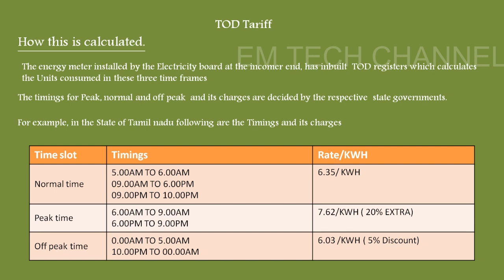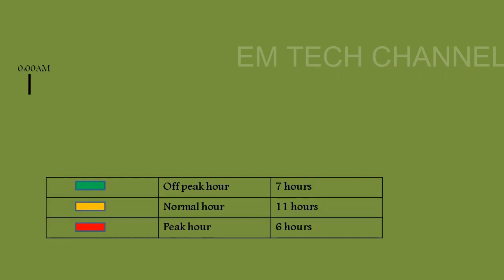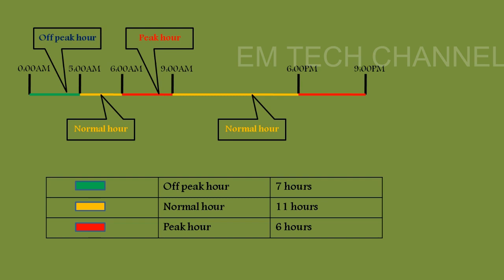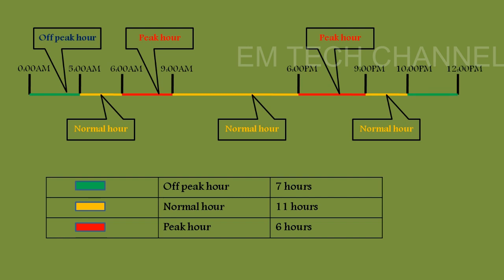Off-peak time is from midnight 12 AM to morning 5 AM and from 10 PM to midnight 12 AM. In this time, energy charges are 6.03 rupees per kilowatt hour, as the government offers a 5 percent discount on normal consumption charges. Looking at the full timeline: 12 AM to 5 AM is off-peak, 5 to 6 AM is normal, 6 to 9 AM is peak, 9 AM to 6 PM is normal, 6 to 9 PM is peak, 9 to 10 PM is normal, and 10 PM to midnight is off-peak — divided into seven time frames.